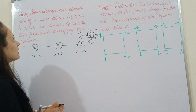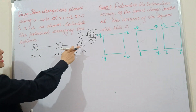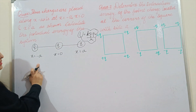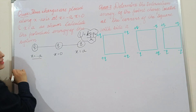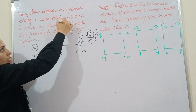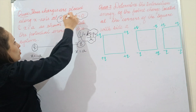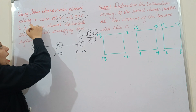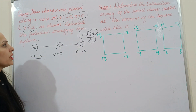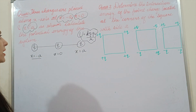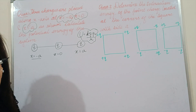Now we will discuss the first question. Three charges are placed along the x-axis at x = -a, x = 0, and x = +a as shown in the figure. We have to calculate the potential energy of the system.